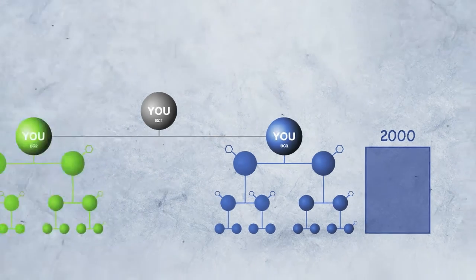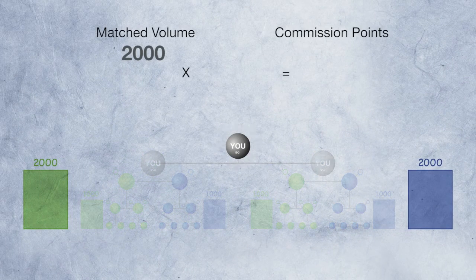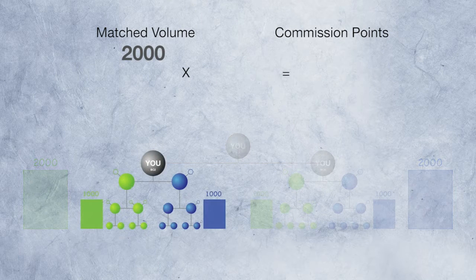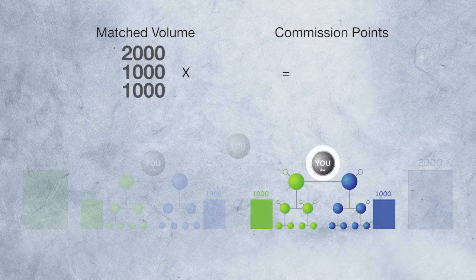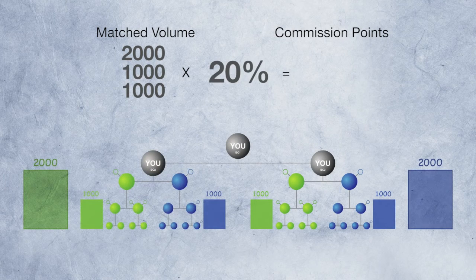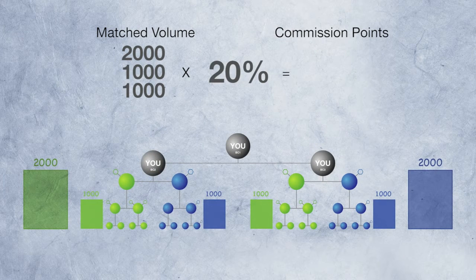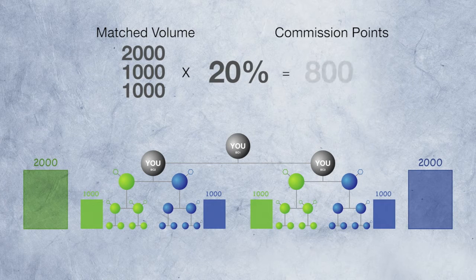To calculate your weekly commission, you've got 2,000 sales volume points from BC1, 1,000 from BC2, and 1,000 from BC3. 20% of the total is your commission. In this example, it's 800 commission points.